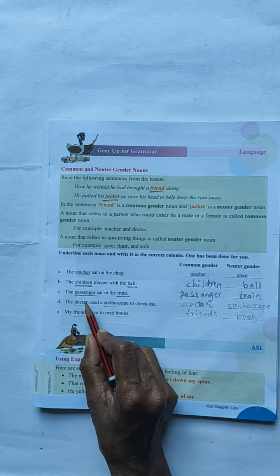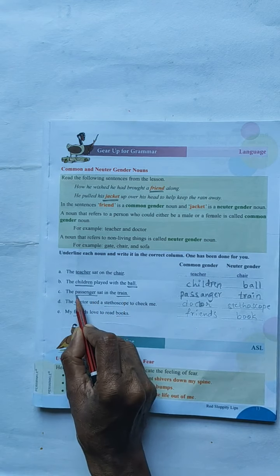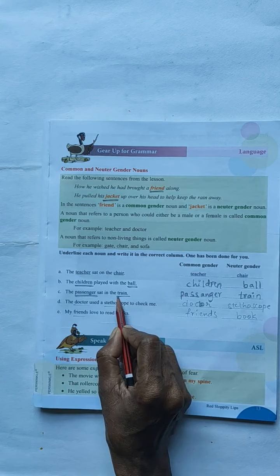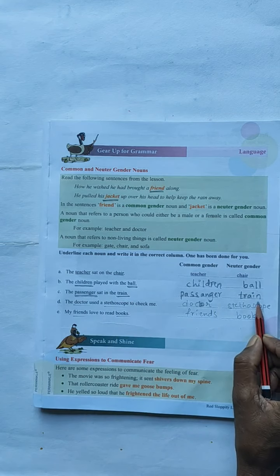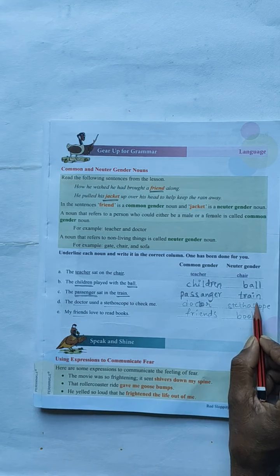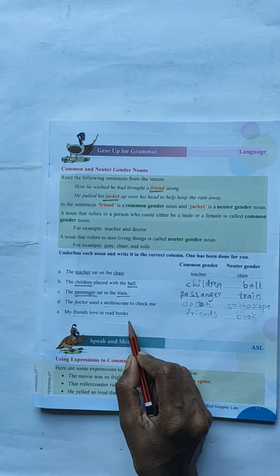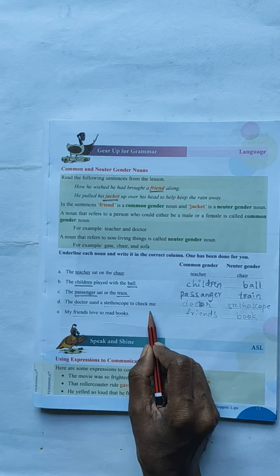The third one is, the passenger sat in the train. In this sentence, you have to underline passenger and train. The passenger means common gender noun. Train means nature gender noun. You have to write in this side passenger and here train.